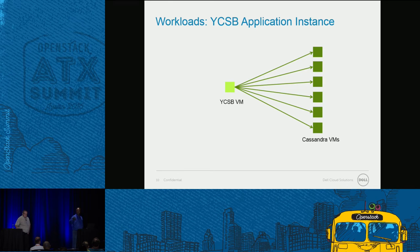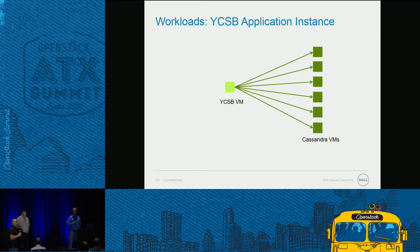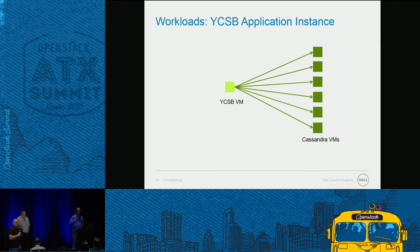We chose Cassandra and YCSB to be a database workload that could scale out pretty easily, and then we decided on a CPU-intensive workload, so we went with the Hadoop cluster and K-Means. We felt that was a pretty good mix of workloads out there today — it hits the network, the disk, and the CPU pretty hard.